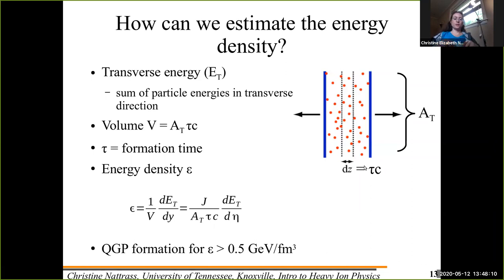And then when you have your incoming nuclei, they don't overlap exactly. So you have some overlap region, and you can estimate the cross-sectional area, the overlap between the nuclei. And that gives you an estimate of the volume.